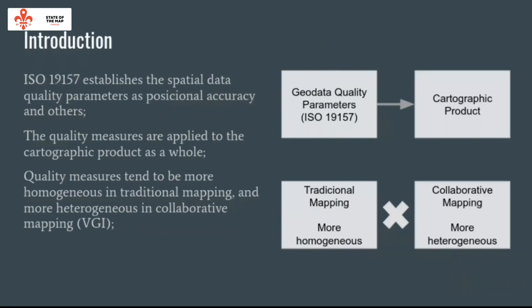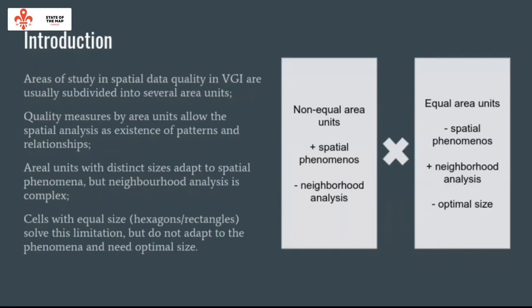The ISO 9.18.157 establishes the spatial data quality parameters for positional accuracy and other quality measures. Quality measures are applied to the cartographic product as a rule. Quality measures tend to be more homogeneous in traditional maps and more heterogeneous in quality maps. Areas of study in spatial data quality in VGI are usually subdivided into several area units with quality measures by area units, although spatial analysis reveals the existence of patterns and relationships.